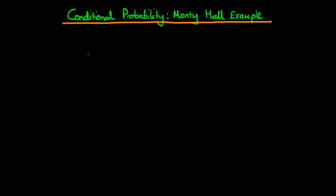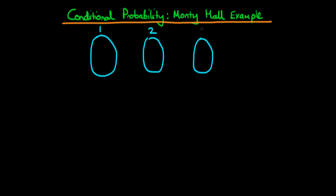Basically the situation here was a game show with three doors — door one, door two, and door three. Behind one of these doors there was a car, whereas behind the other two there was a goat. The contestant got to pick originally what door they would like. The probability that the car is behind any one of these doors to begin with is just one third.